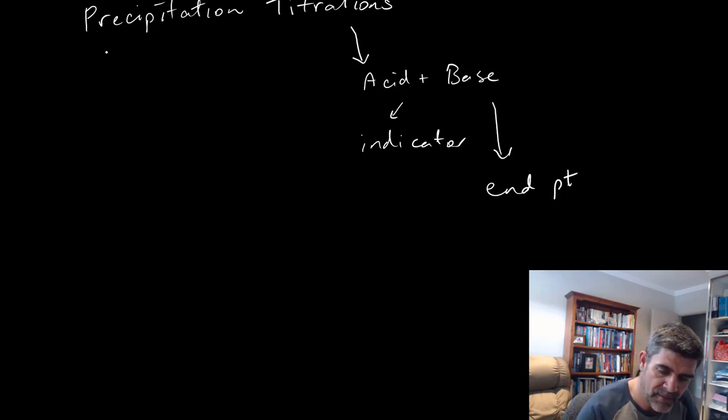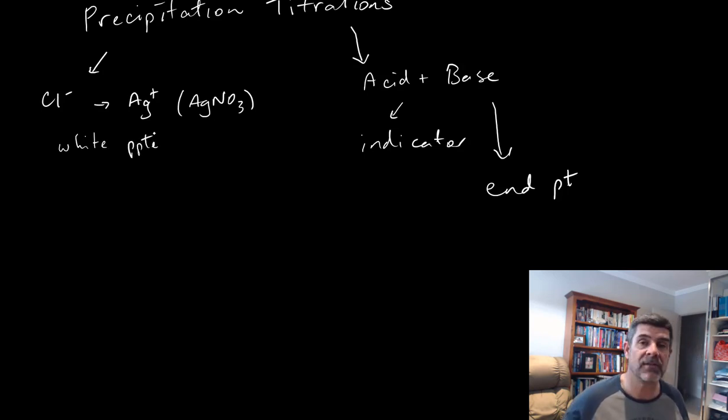So for example, if we were to investigate something like chloride ions in solution, then we might do this by the addition of a solution containing silver ions, so something like silver nitrate. Now as we add the silver nitrate to the solution that contains chloride ions, we should see the white precipitate forming. And that's fine, and that gives us our qualitative measure. Yes, there were chloride ions present, and we've seen them by precipitating them out with the silver cation.